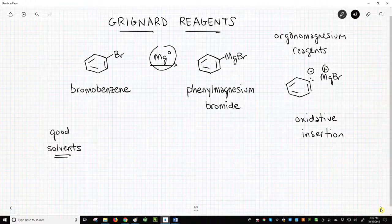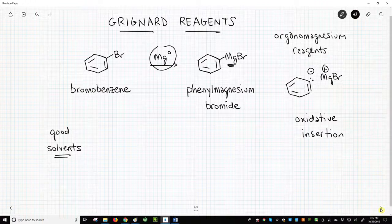For making Grignard reagents, it does look like the magnesium atom has inserted itself into the carbon-bromine bond. Let's talk about the solvent for this reaction.